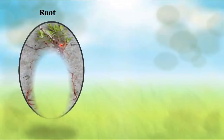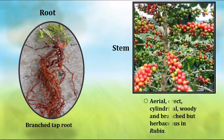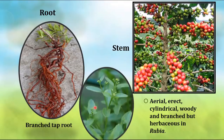The second salient feature relates to the root: it is a completely branched taproot system. The stem is completely woody — erect, cylindrical — but in some plants this woody stem is not observed. For example, in Rubia tinctoria, it is a completely herbaceous type of stem.